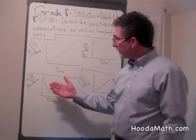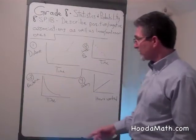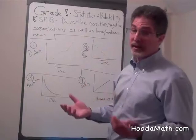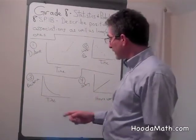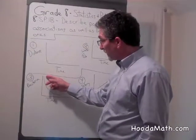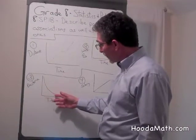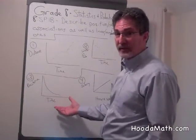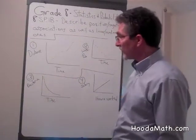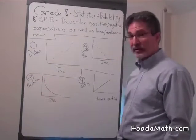And then we have linear and non-linear associations. This is a non-linear association. Let's say you're sick — you have an infection, you go to the doctor, and she gives you an antibiotic. As time goes by, the amount of bacteria decreases rapidly, and then decreases slower over time until your body can fight it off. So this is a non-linear association. It's also negative, as the bacteria decreases over time.